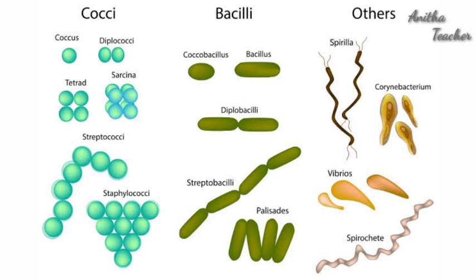Rod-shaped bacteria are called bacilli. The bacillus forms may exist singly or in groups. If the bacillus exists as a single elongated cell it is called Monobacillus. If paired bacilli are present it is called Diplobacillus. Streptobacillus refers to a group of rod-shaped bacteria arranged in a straight line.